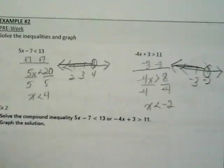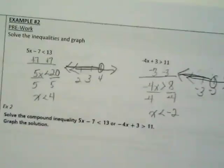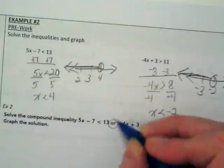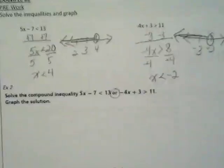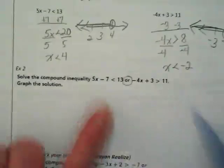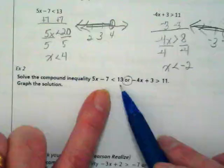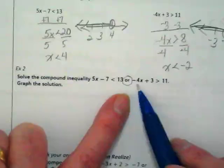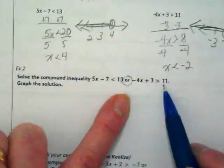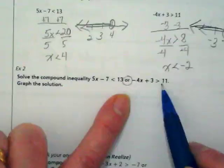So we're going to do the same thing down here, and we're going to find out how this looks on a graph when it's a compound inequality. We don't need to redo the work. If you notice, these are the exact same inequalities: 5x minus 7 is less than 13, or negative 4x plus 3 is greater than 11.